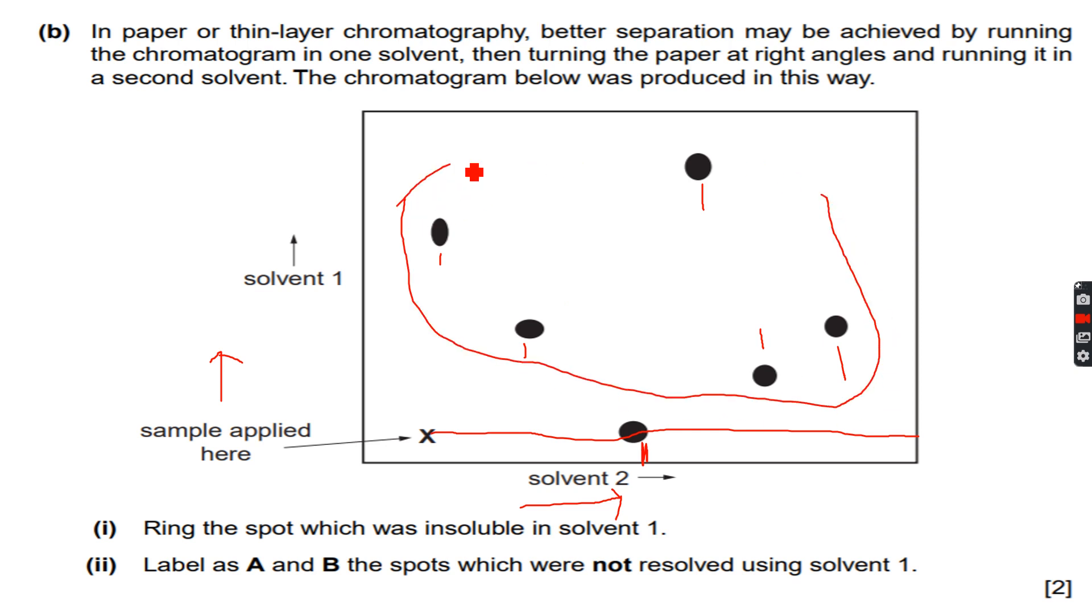However, the one that is not inside the circle that I've made, the one over here marked X, has not moved. So this spot was insoluble in solvent 1 because it hasn't moved from the reference. So we will ring this spot because it is insoluble in solvent 1.